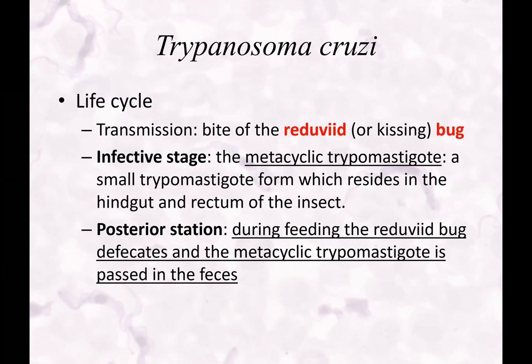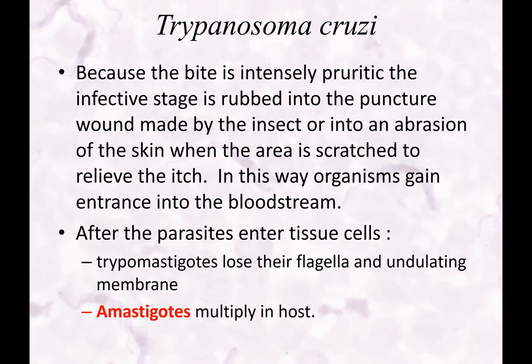The life cycle transmission is via bite of the reduvid or kissing bug. The infective stage is the metacyclic trypomastigote — a small trypomastigote form which resides in the hindgut or rectum of the insect, the posterior station. During feeding, the reduvid bug defecates and the metacyclic trypomastigote is passed in the feces. Because the bite is pruritic and itchy, the infective stage is rubbed into the puncture made by the insect, enters the abrasion, and gains access to the bloodstream — that's where we diagnose these.